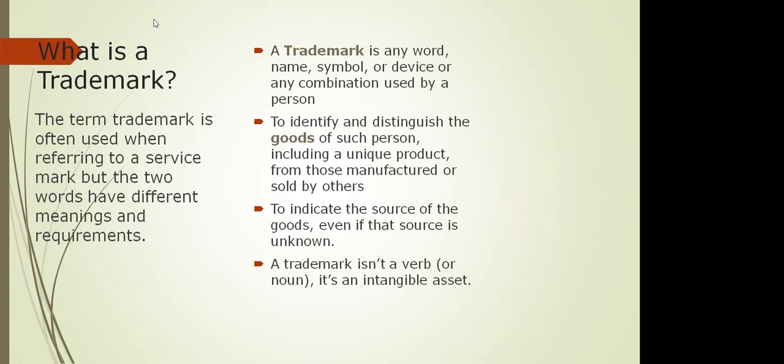A trademark is an intangible asset. For example, take Frito-Lay — the particular way the name is written, the font, the color, and how the product is marketed and packaged all form part of the trademark. That packaging element comes under trade dress. A trademark includes the symbol that uniquely identifies a product. For example, McDonald's has a trademark: the clown-like figure and the tagline 'I'm loving it' — both are registered trademarks. Similarly, KFC has its own distinctive trademark.